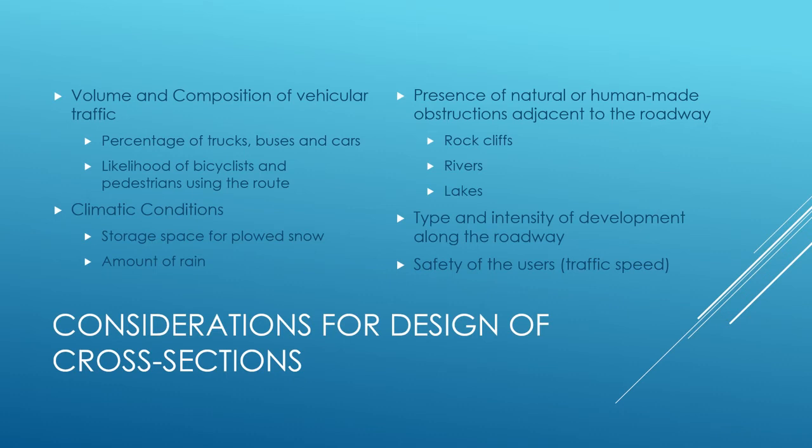If we had that kind of rain in this area, it would pretty much shut down traffic. You'd have standing water on the roads because our slopes aren't enough to get the water off. So it really depends on the area, what type of weather you typically deal with. The presence of natural features — rock cliffs, rivers, lakes — will also determine what type of cross-section you have.